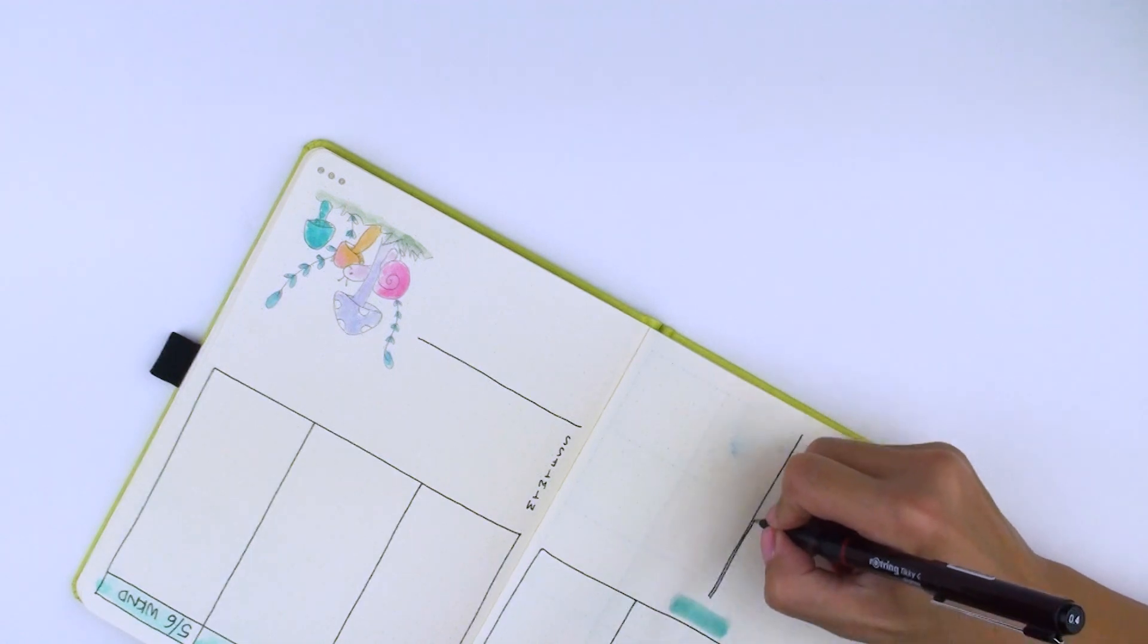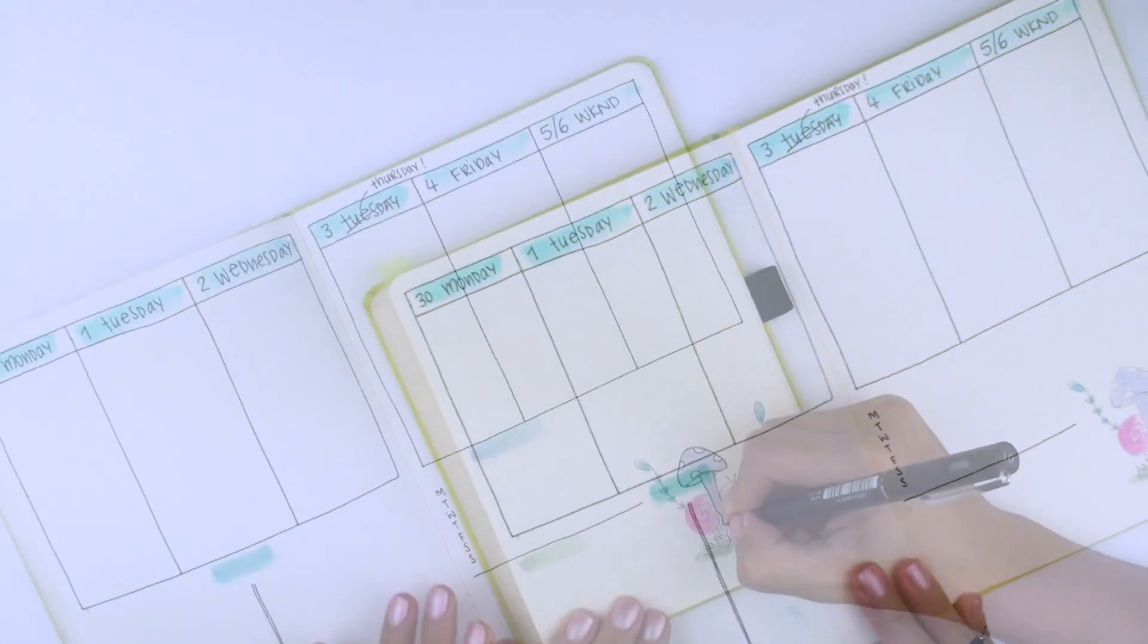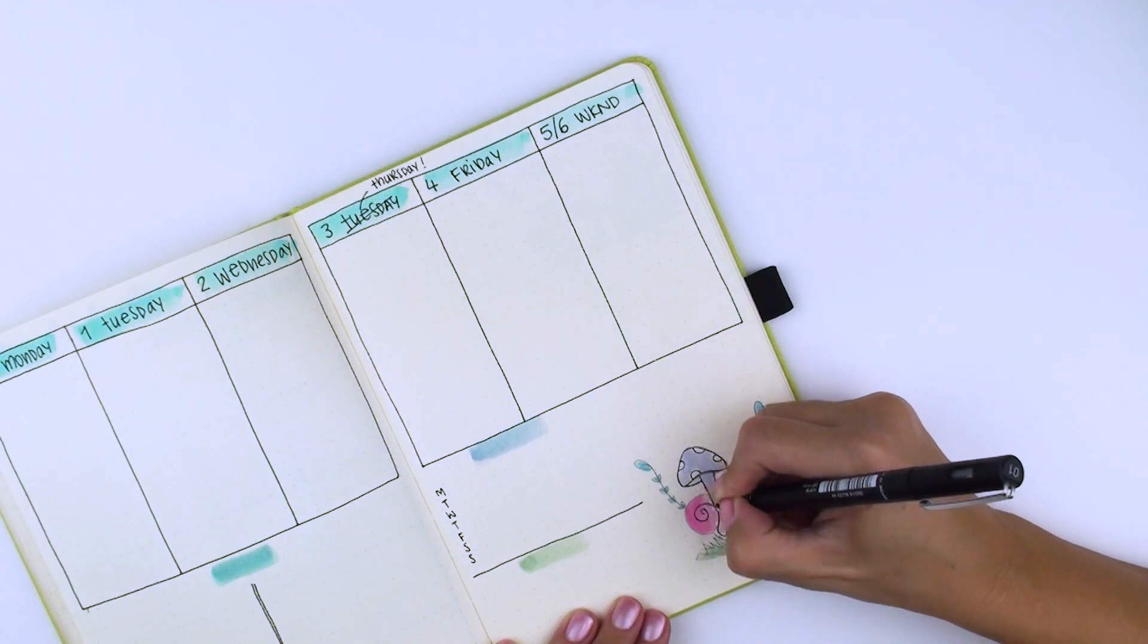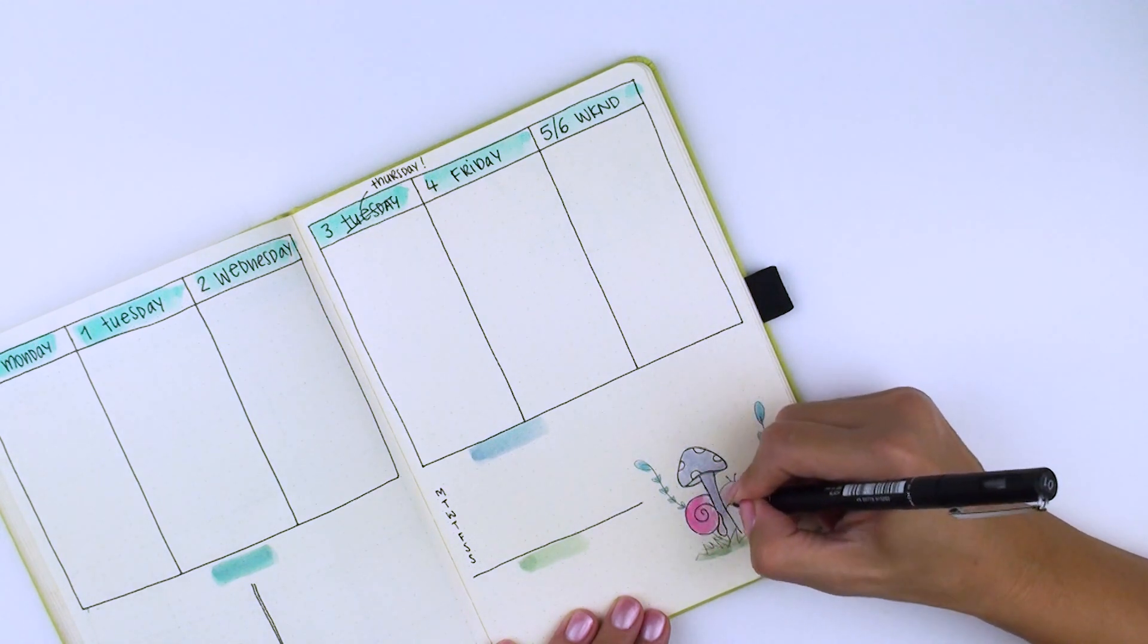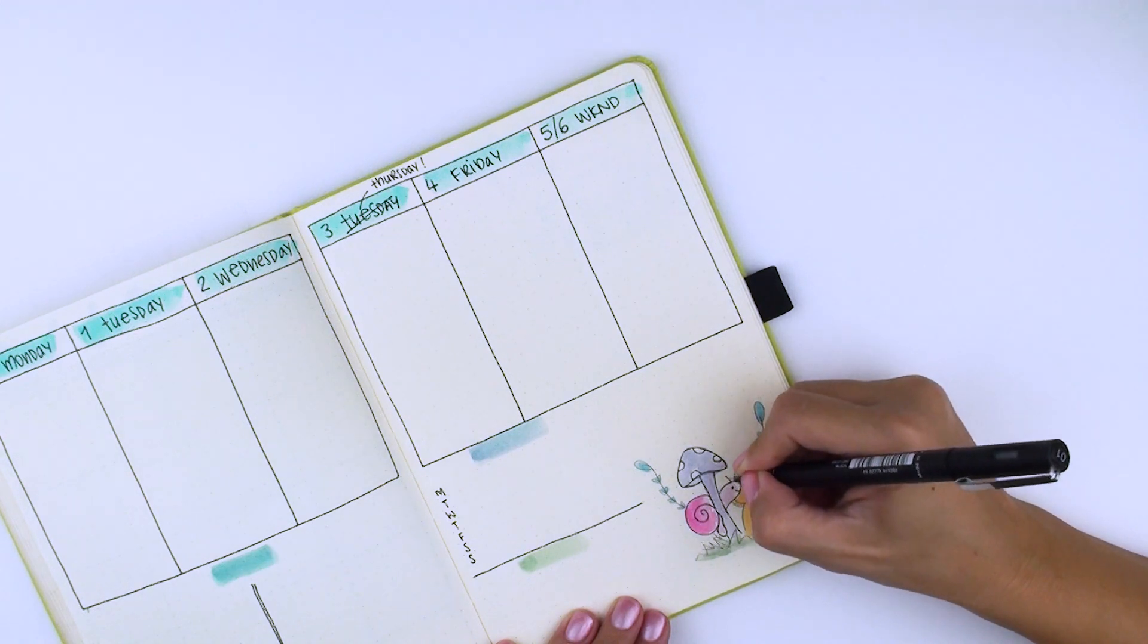How do you deal with mistakes in your bullet journal? Let me know in the comments below. If you're interested, I have two blog posts talking all about mistakes and ways to fix them. I'll leave the links in the description below.